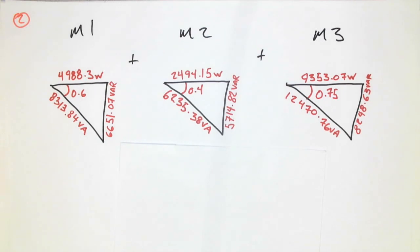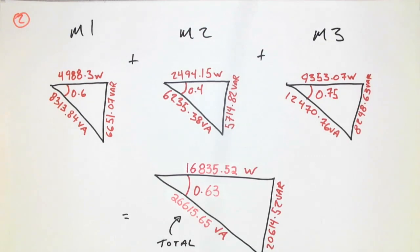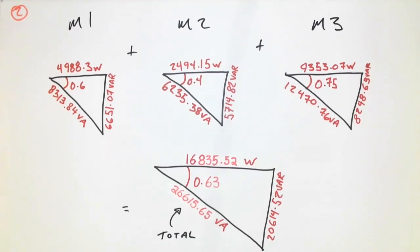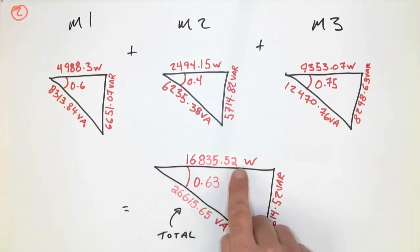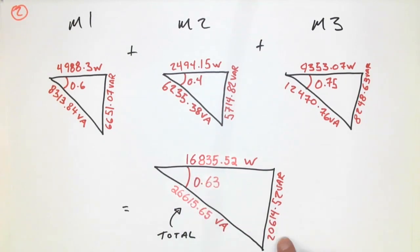Once we've got all of the vertical components calculated and all the horizontal, we add them in a large total circuit power triangle. In doing this, we get a total VA of 26,615.65, found from total watts of 16,835.52 and total VARs of 20,614.52. The power factor for this total circuit will then be 0.63, and of course that would be lagging.